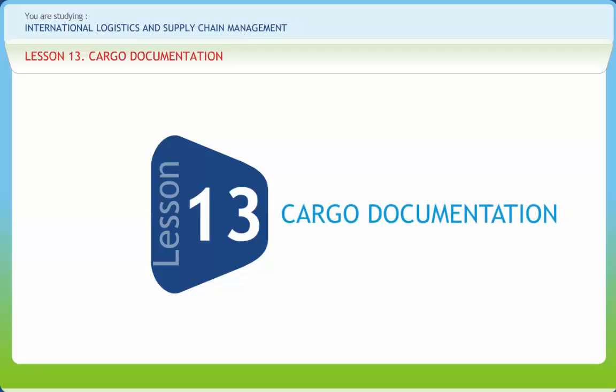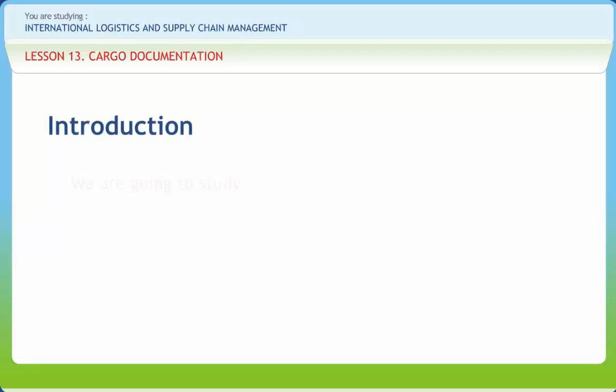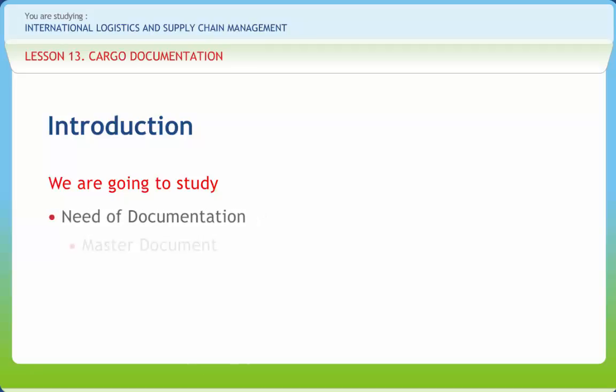Cargo Documentation. We all know trade between two business firms located in different countries begins with the conclusion of an export contract. Under the contract, the duty of the exporter is to ship the contracted goods in the agreed form and by agreed mode of transport, as well as according to the agreed time schedule. In this lesson, we will study the need of documentation, master document, and standardized document.